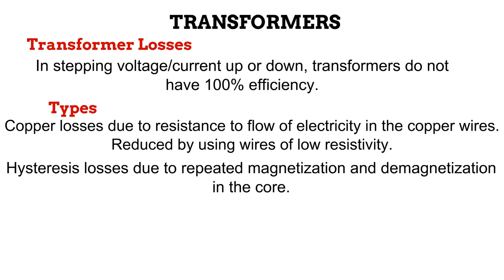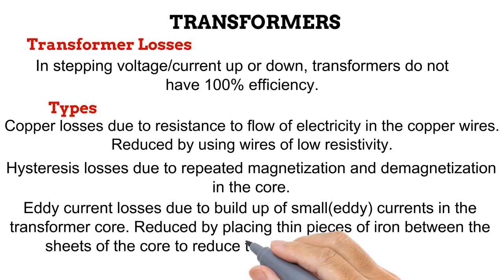Another type of transformer loss is hysteresis. As current is induced in a transformer, a repeated magnetization and demagnetization of the core is experienced. This process causes reduced efficiency. Lastly, we have eddy current losses which occur due to the buildup of small currents within the core of the transformer. If thin pieces of iron are placed between the sheets of the transformer core, these eddy currents are unable to be transmitted and losses due to them are thus reduced. This method of reducing eddy current losses is called lamination.